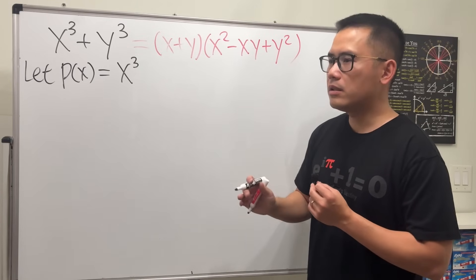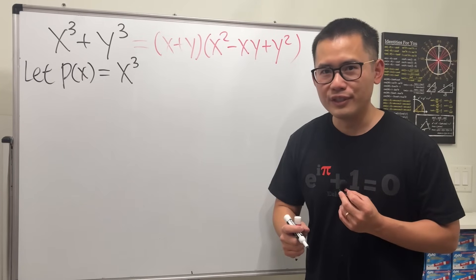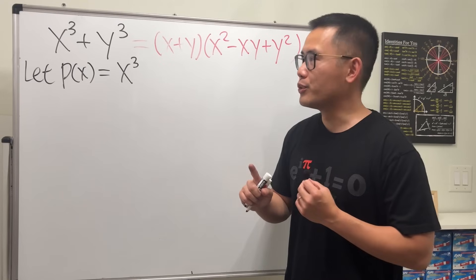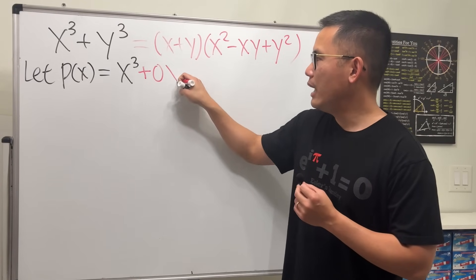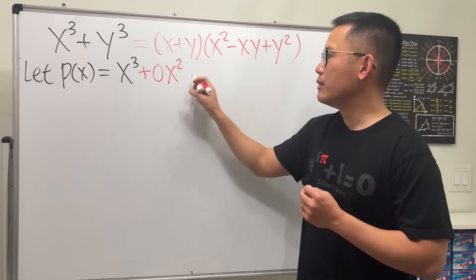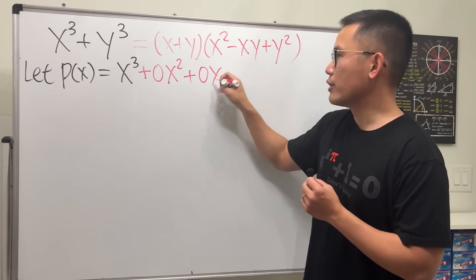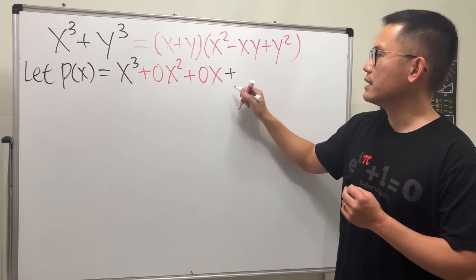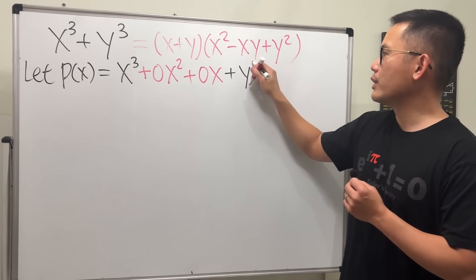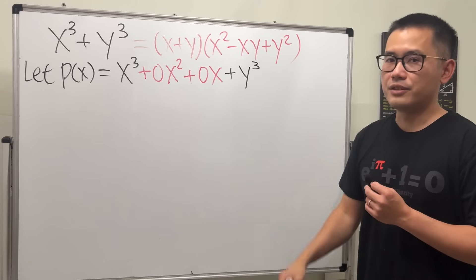And because later on, I'm going to do synthetic division, we need to have all the powers. So I'm going to do this on purpose. I'm going to add 0x squared, because I didn't have that, plus 0x to the first power, again, because I didn't have that. Lastly, plus, I don't need the x anymore, and then we have the y cubed. So this is like the constant term.